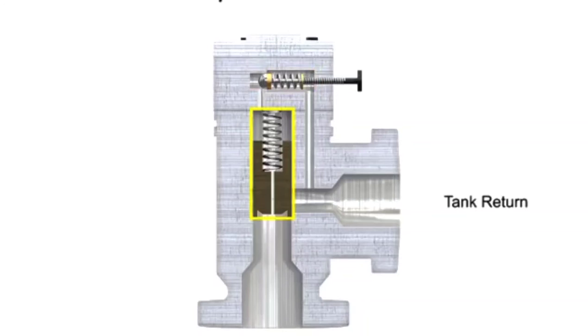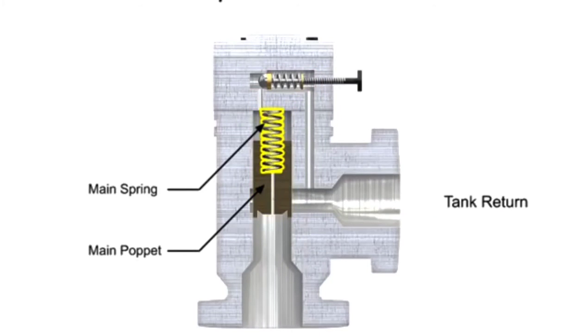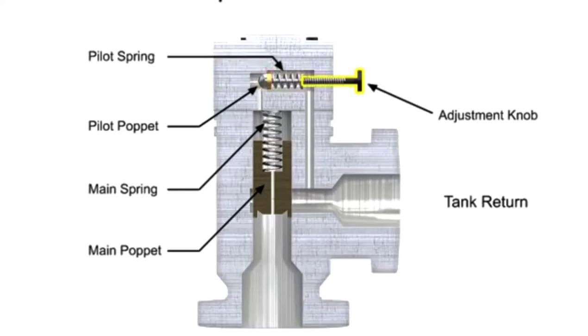The first stage is composed of the main valve with a poppet and spring large enough to handle the maximum flow rating of the valve. The second stage is composed of a much smaller, direct acting pilot valve which includes a pilot relief poppet, pilot spring, and an adjustment knob. This smaller relief valve is usually mounted crosswise on the main valve body.